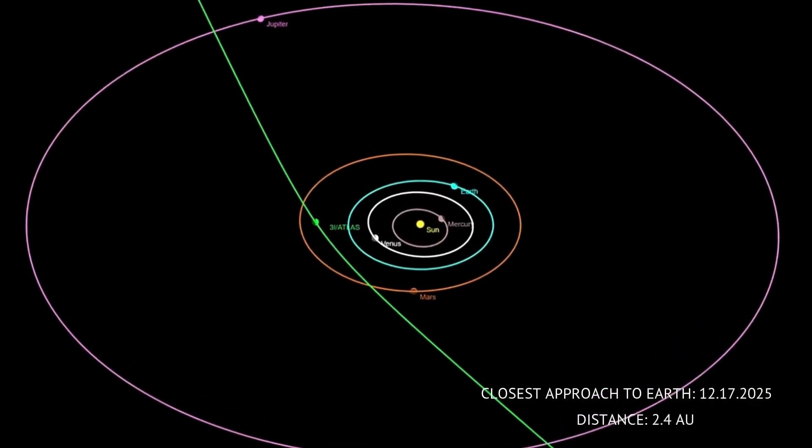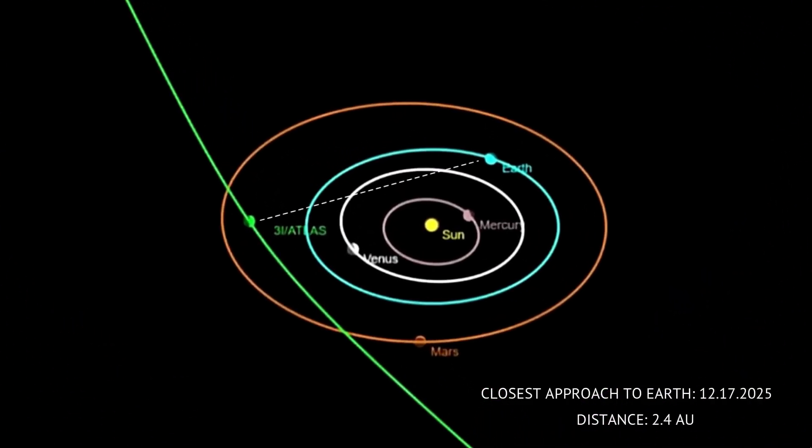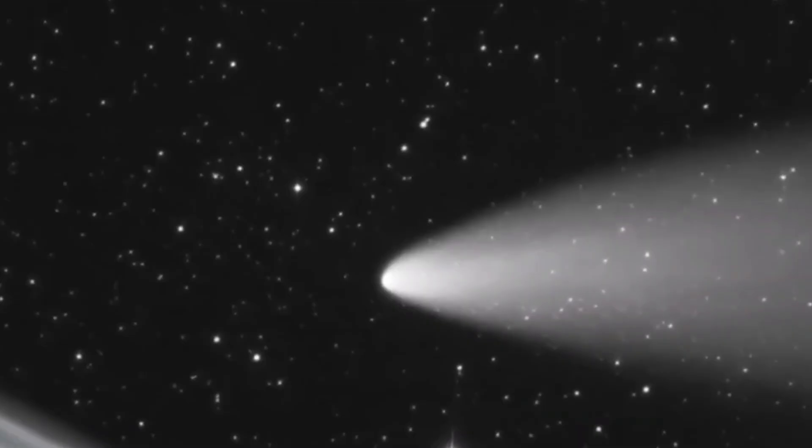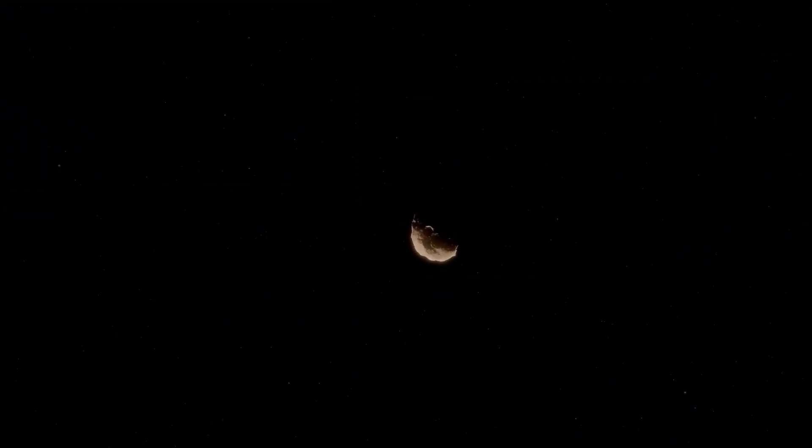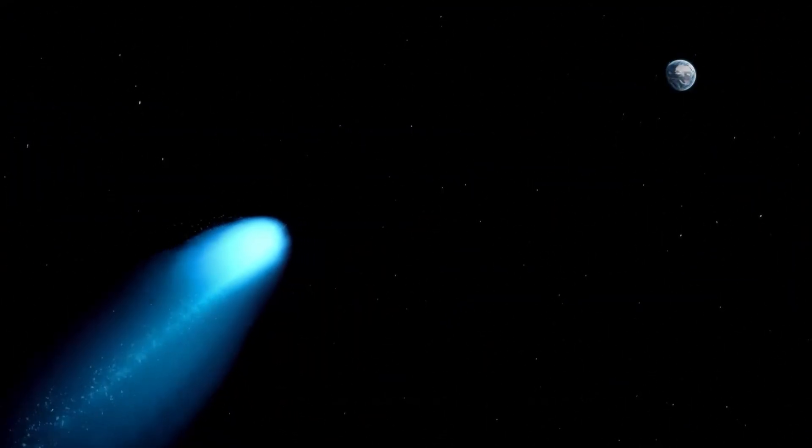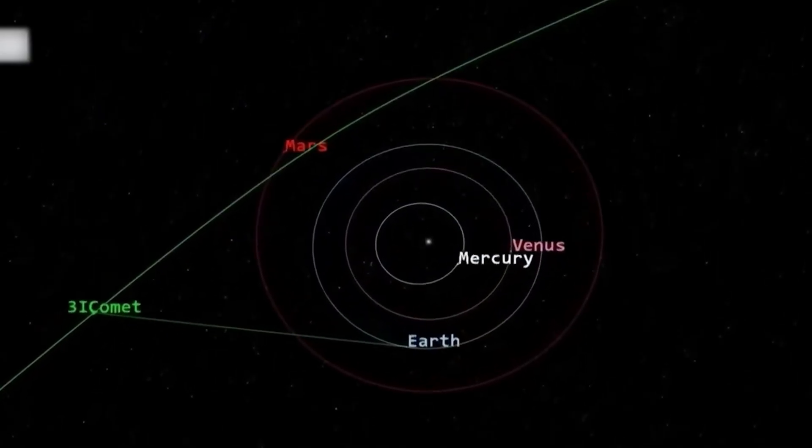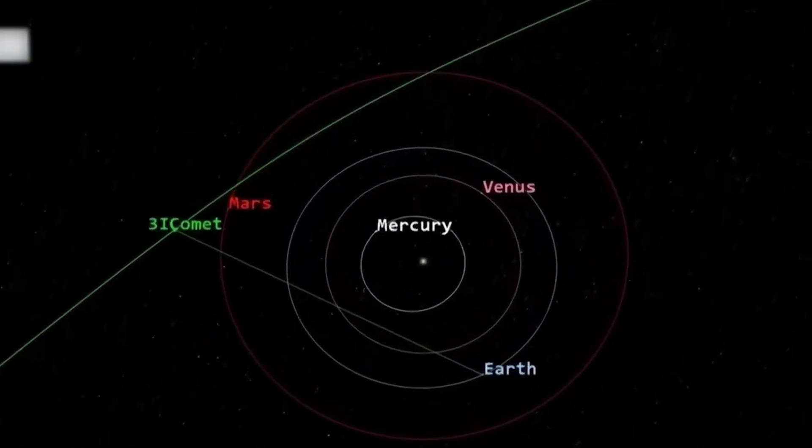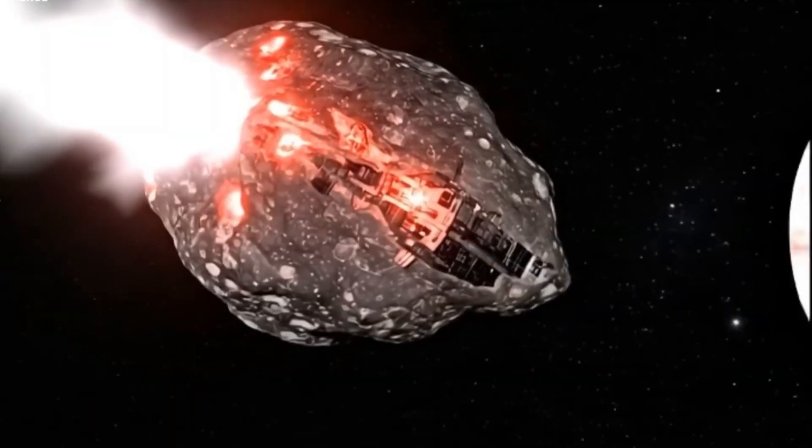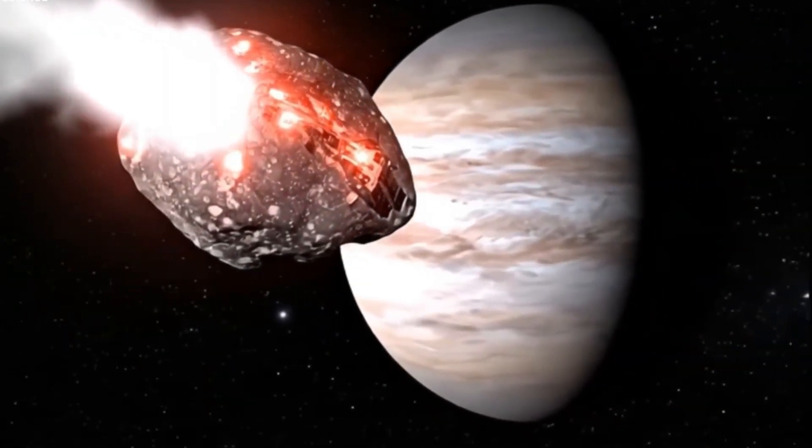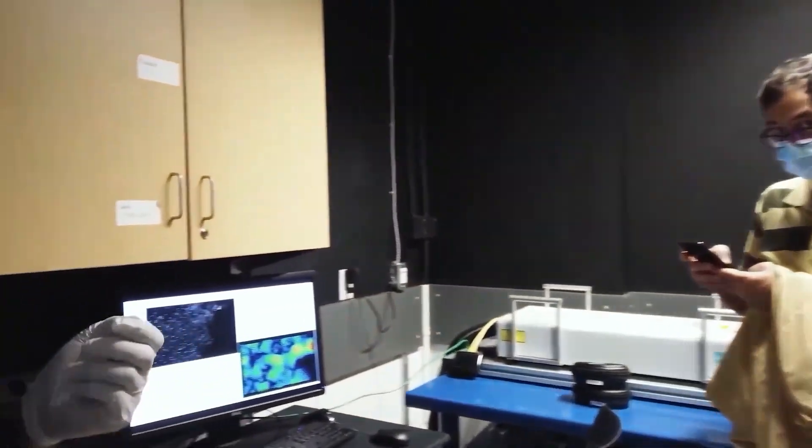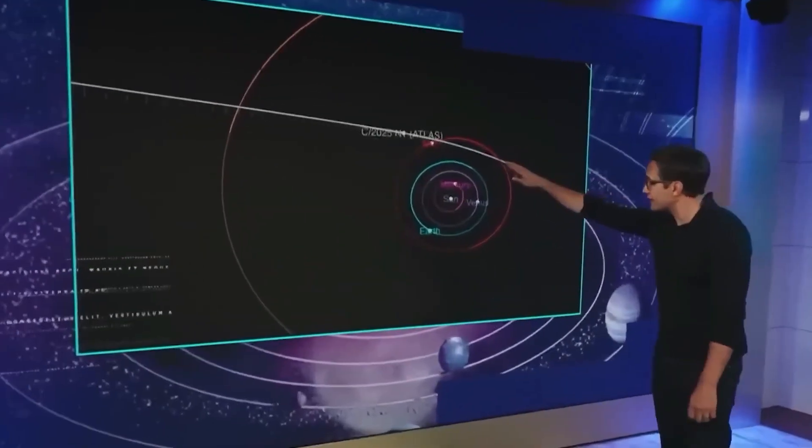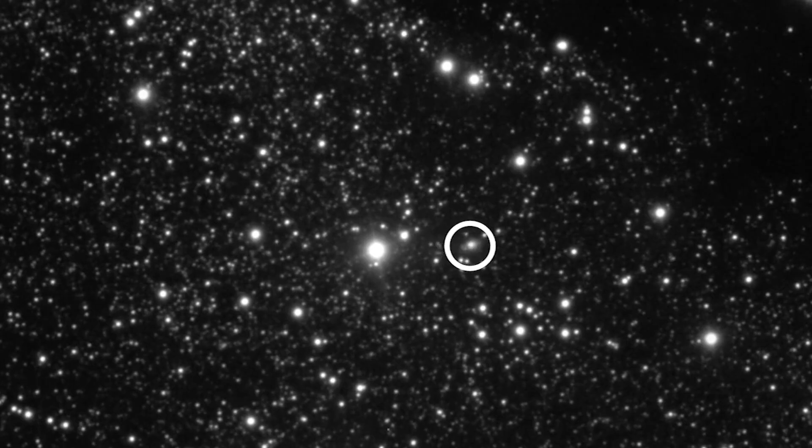The next few months will be crucial. As 3i Atlas continues its journey through our solar system, our most powerful telescopes will be gathering data that could answer one of the most profound questions in science. Whether it's a natural relic from the dawn of another planetary system, or evidence of visitation by another civilization, this object represents a pivotal moment in human understanding. Humanity is living through a time when the universe is revealing its secrets at an unprecedented pace. 3i Atlas is just the latest reminder that the cosmos is far stranger and more wonderful than ever imagined. The truth about what it really is could change everything we think we know about life, intelligence, and our cosmic neighborhood.